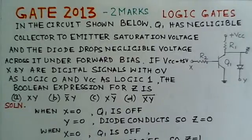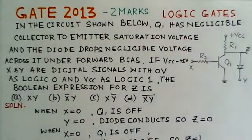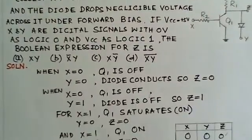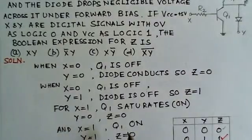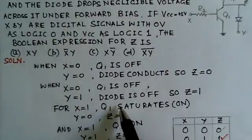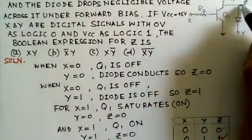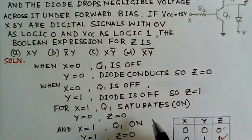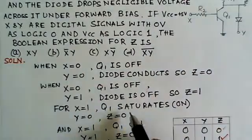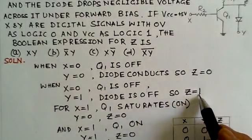Now the second is for X is equal to 0 and Y is equal to 1. When X is 0, Q1 is off, that means the transistor is off. But this time Y is 1. When Y is 1, the diode would be off. Since the diode is off, the output voltage here at the collector will appear here at the output. That is VCC. Because since it is off, it will be VCC. That diode will be having, the output would be 1.